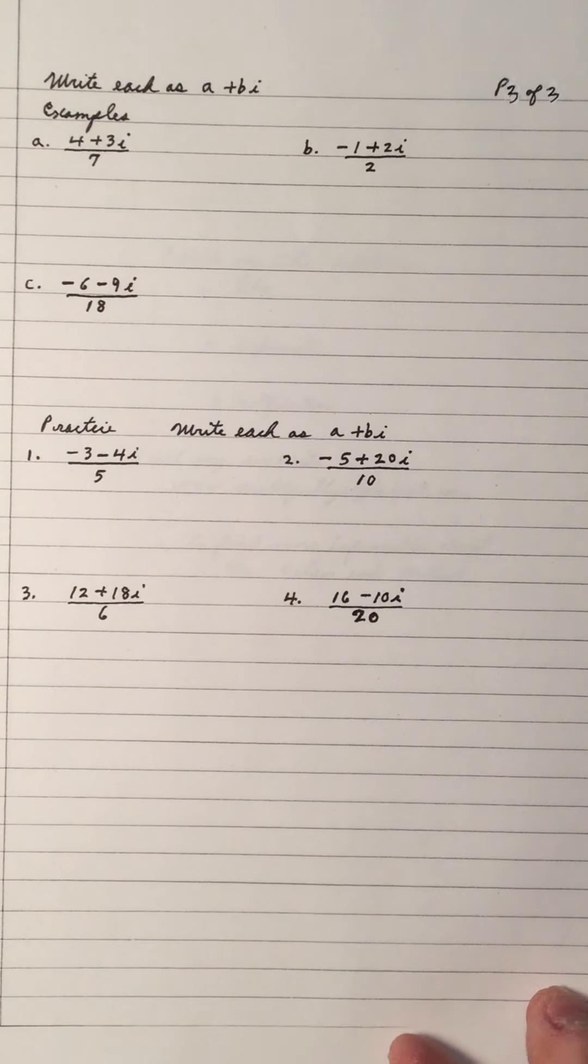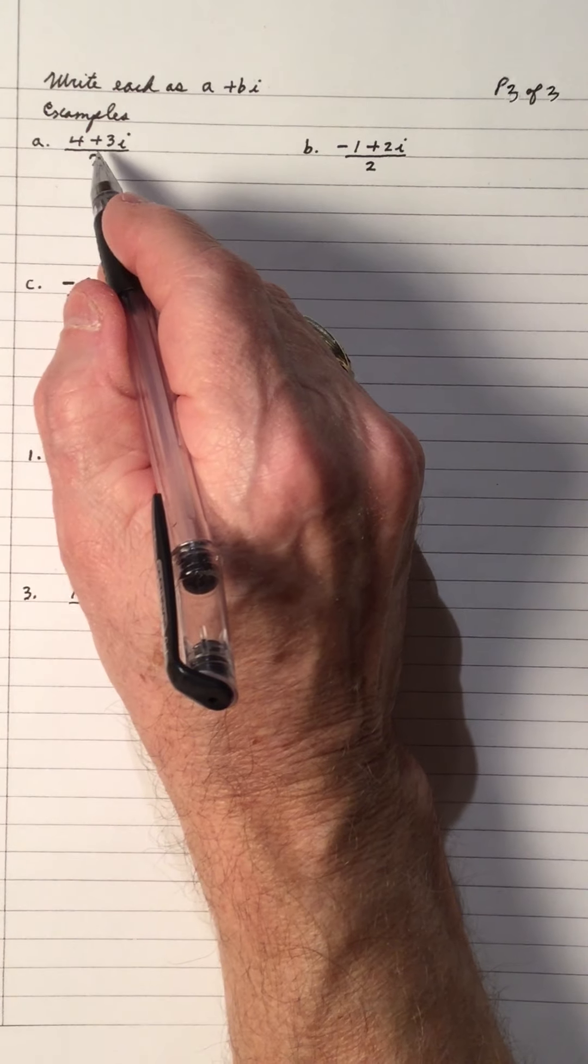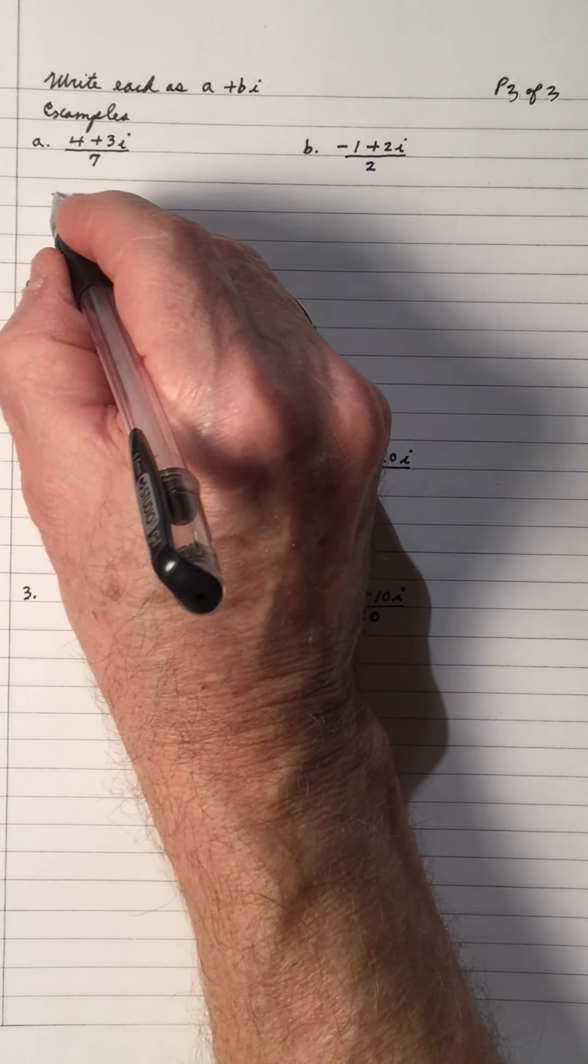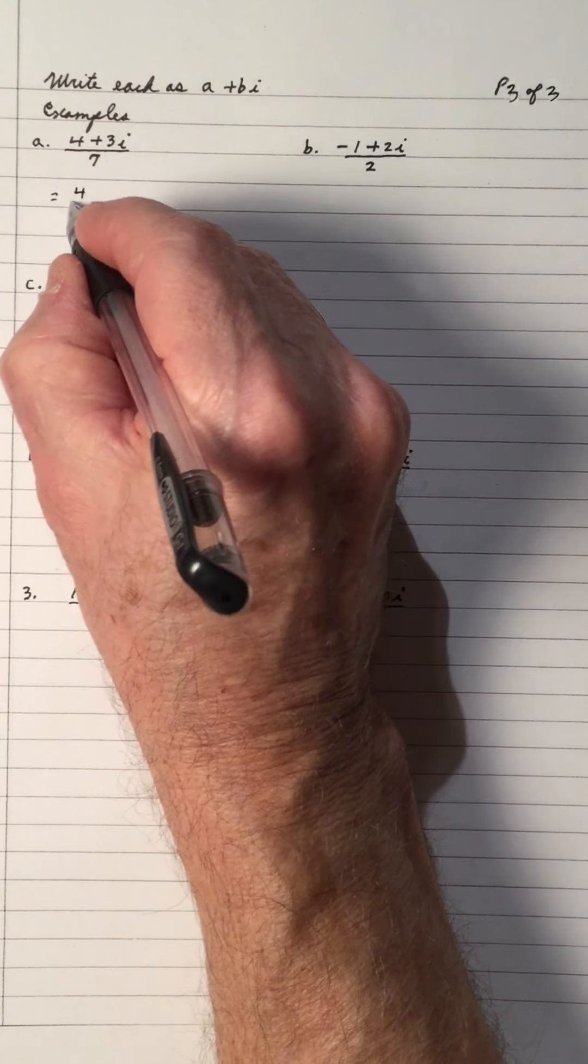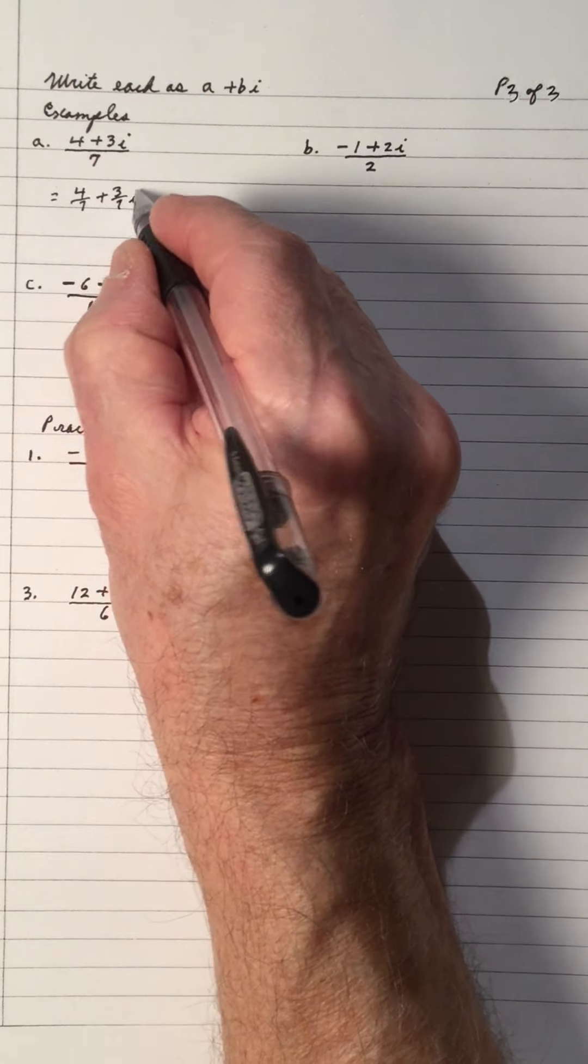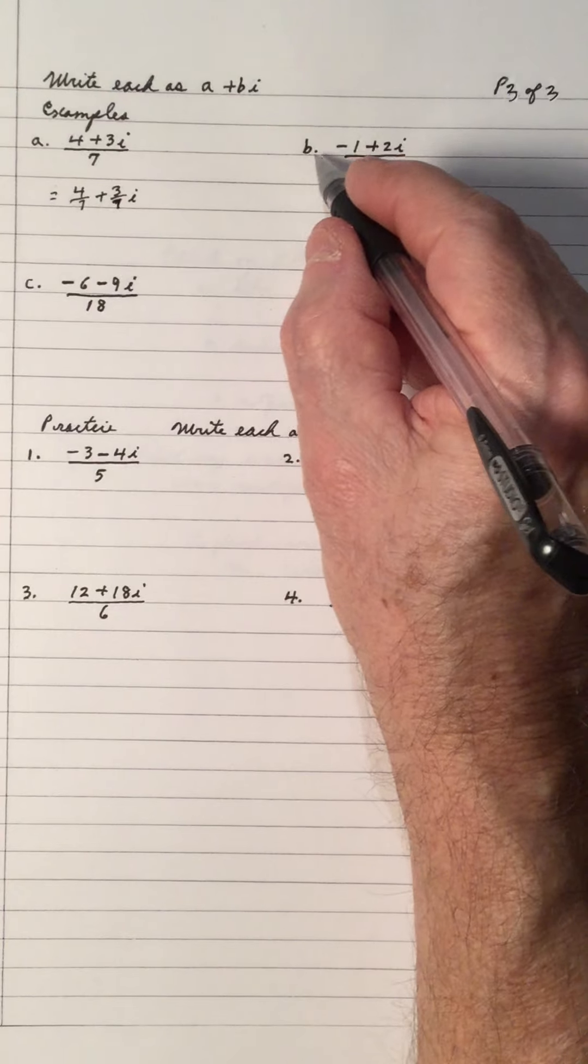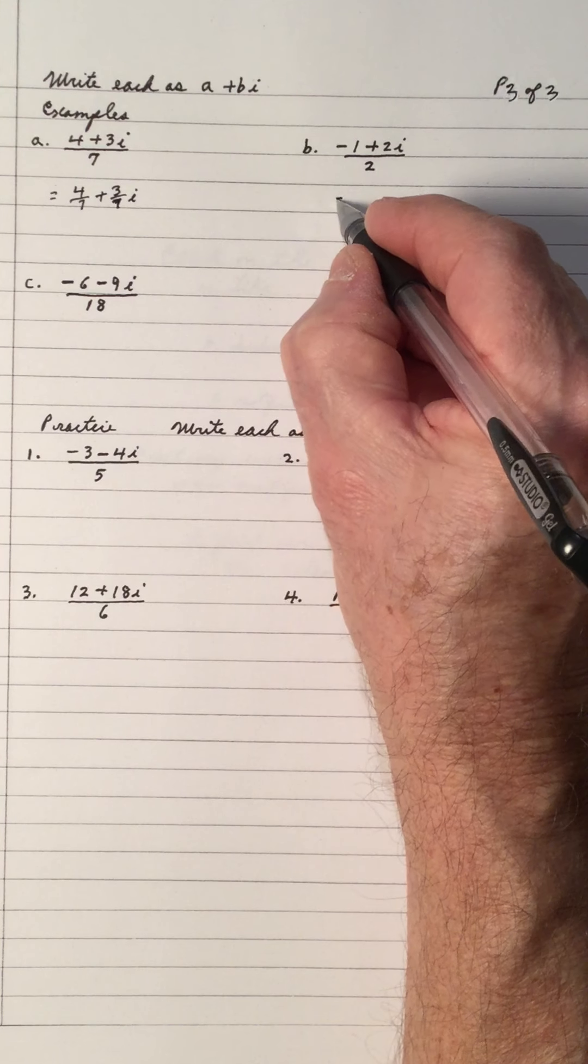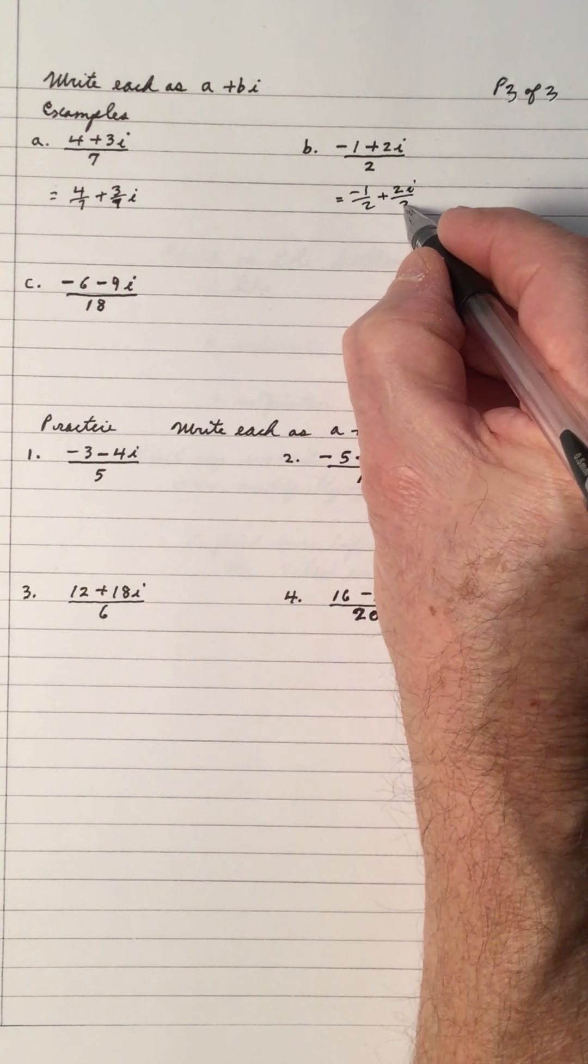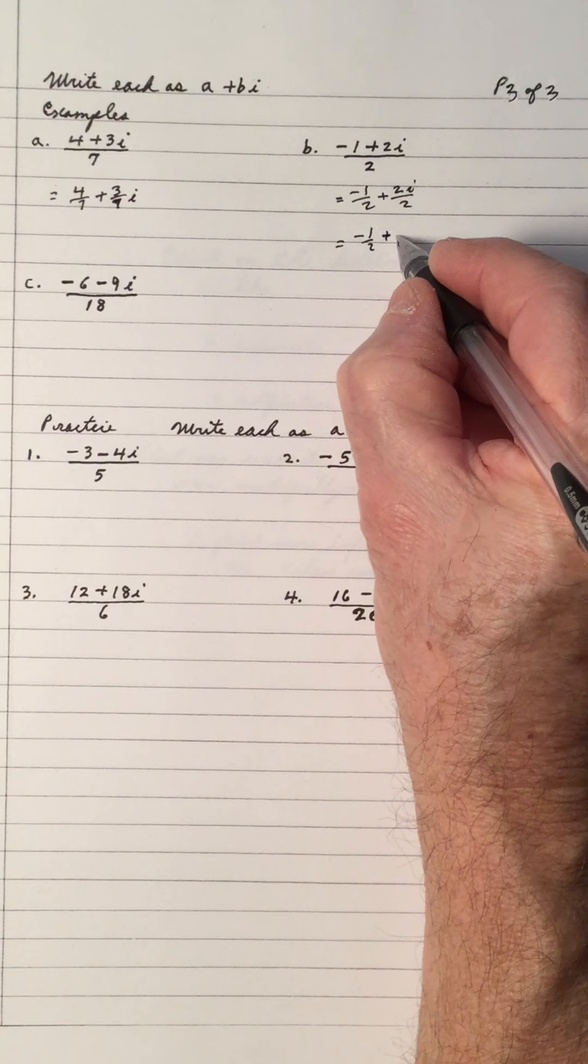Write each as a plus bi. So, now we're going to reverse it. So, now we have one fraction and we need to express it as two parts, a real part and imaginary. So, that means that the 4 is being divided by the 7 plus 3 is being divided by 7. 3 over 7i. And B, the negative 1 is divided by 2. And the 2i is divided by 2. And that simplifies to negative 1 half and 2 divided by 2 is 1i.